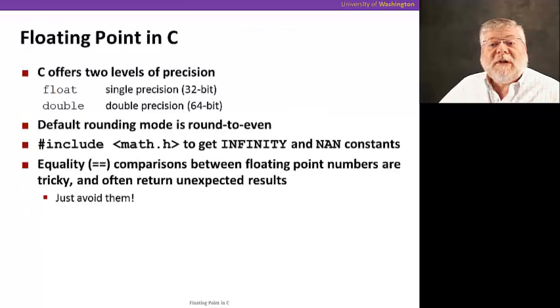C offers two levels of precision for floating-point numbers, as we've already seen in the IEEE floating-point representation, both a 32-bit representation for floats, as they're referred to, and a 64-bit representation for doubles.